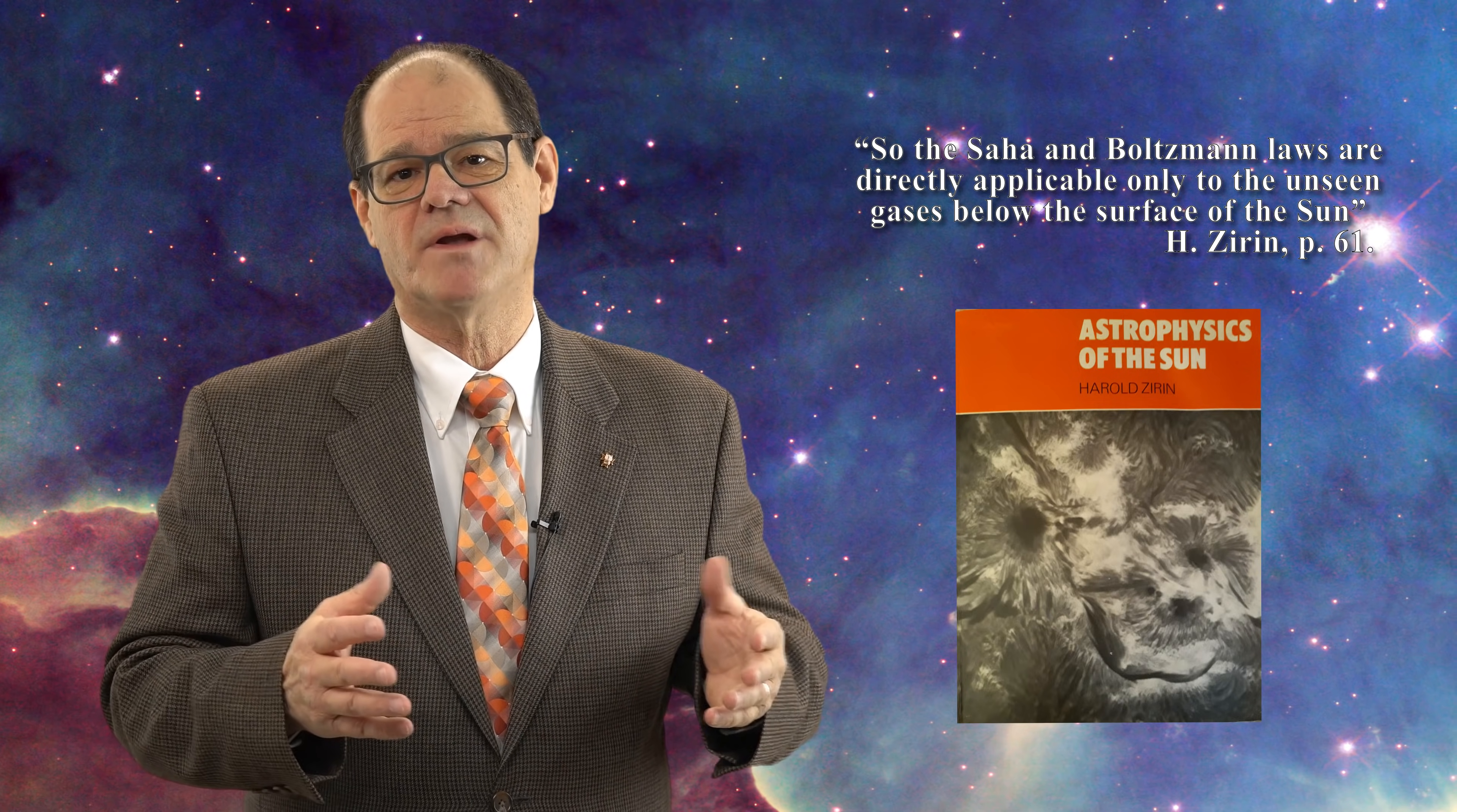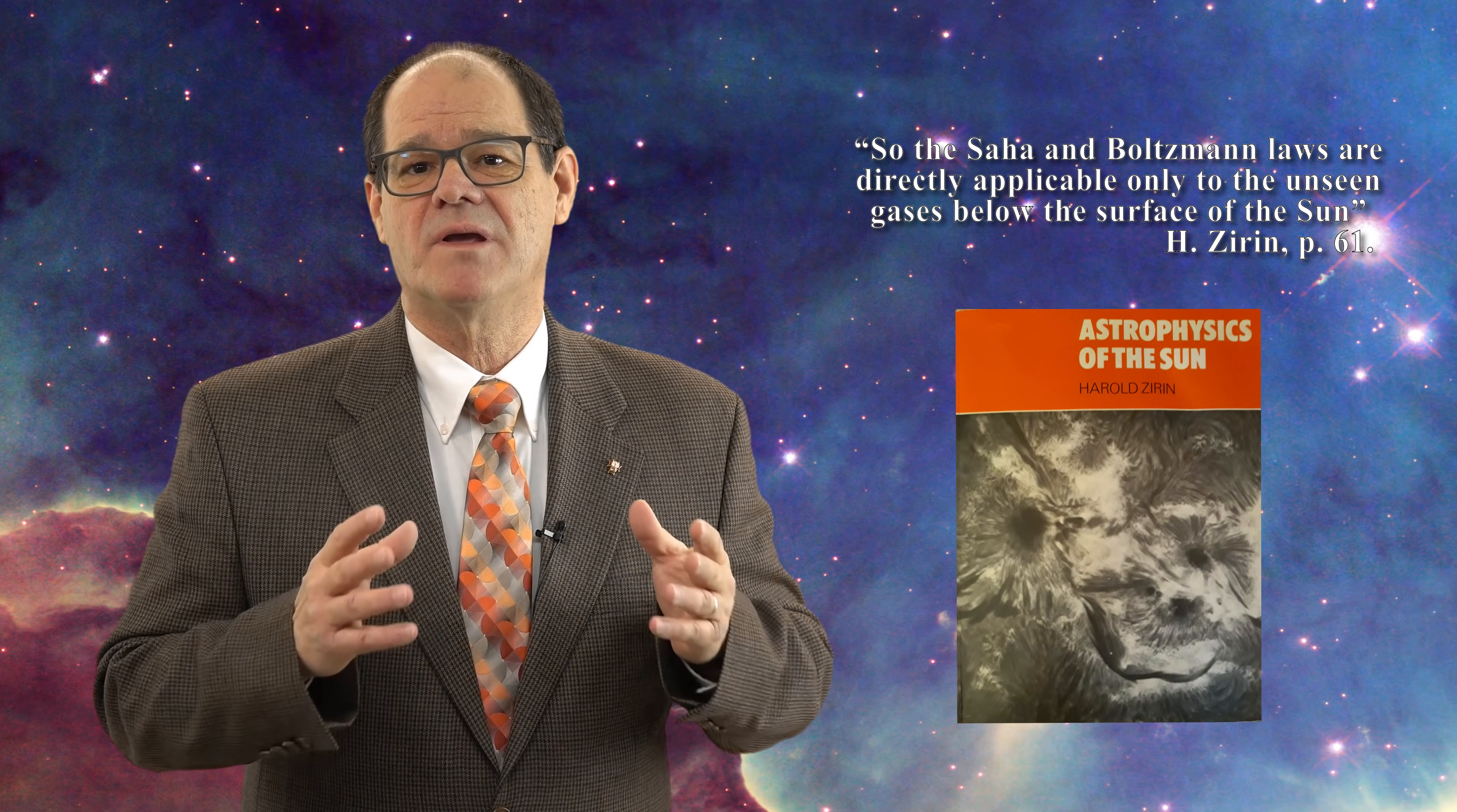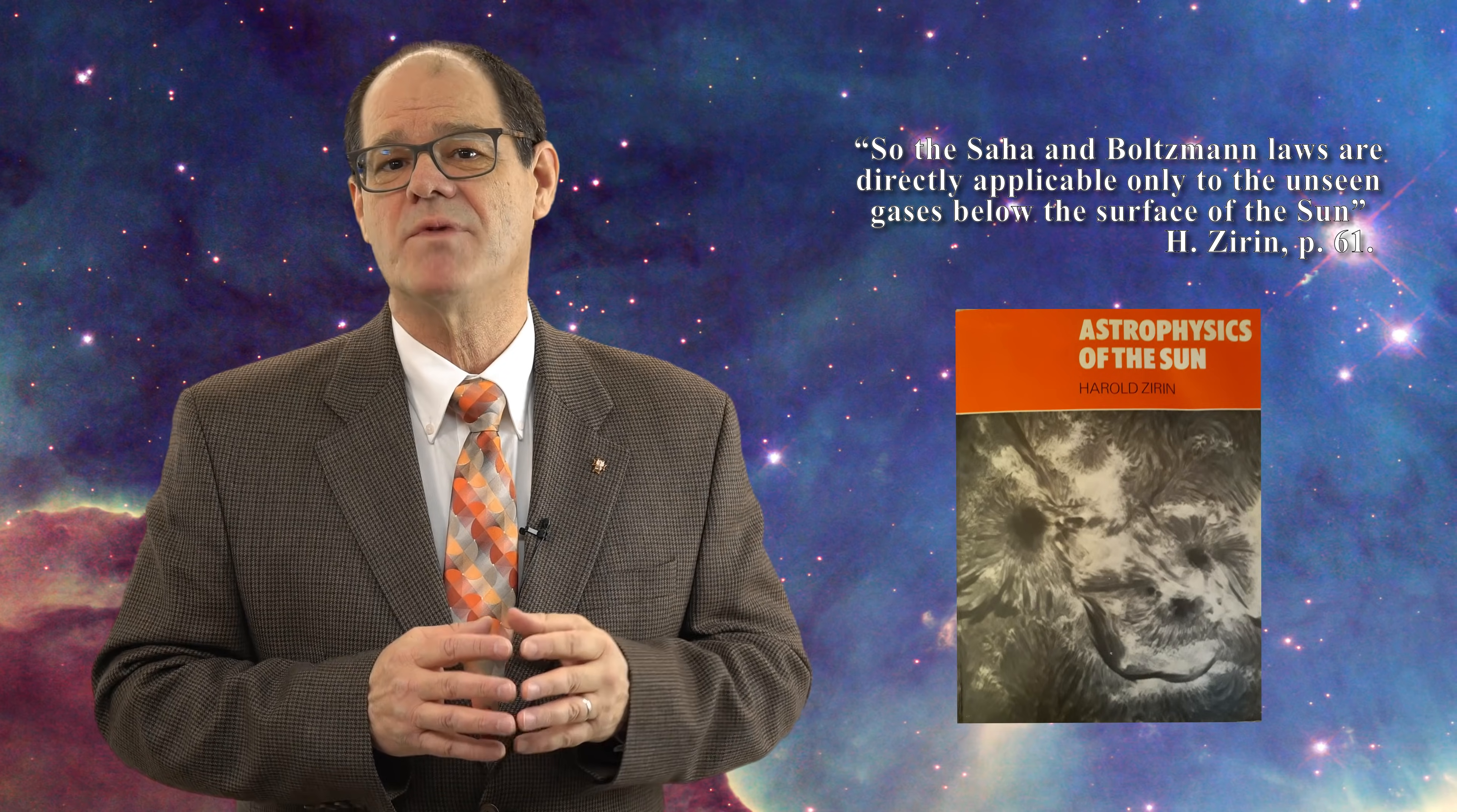So the Saha and Boltzmann laws are directly applicable only to the unseen gases below the surface of the Sun. In short in Zirin's opinion the Saha equation and the Boltzmann equation cannot be used to examine the Sun at all because we cannot even see spectroscopic lines below the solar surface. The solar atmosphere is not in thermal equilibrium and that is why we cannot use the Saha equation to analyze it.